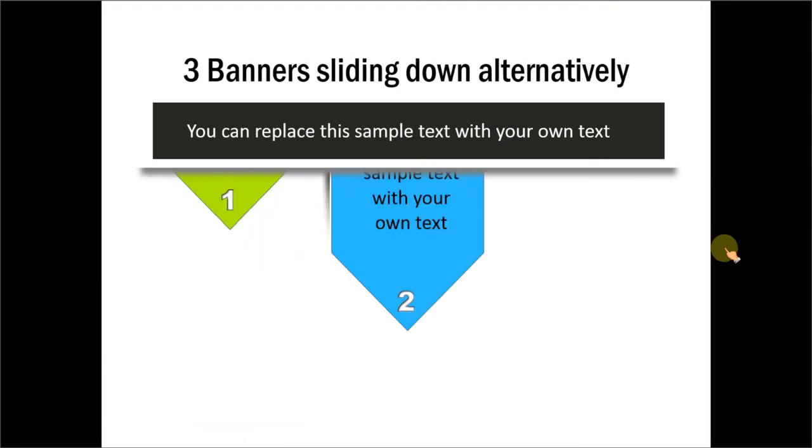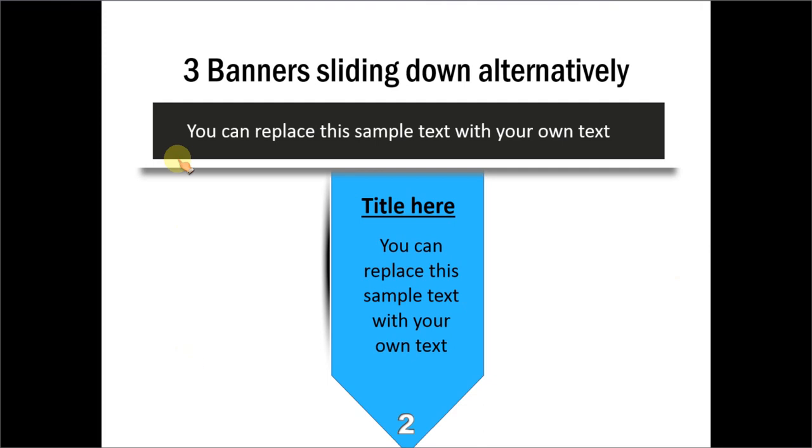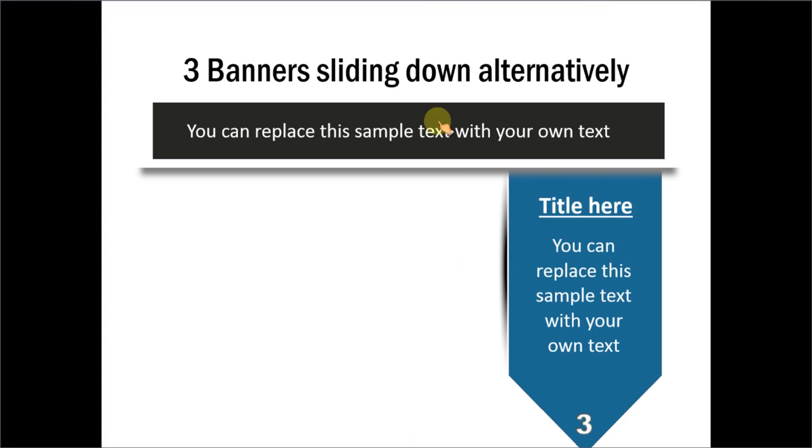Then we have the first banner talking about the first point. Now as I click, the first banner goes up and the second one comes down and it shows the second point. And as I click, the second one goes up and the third one comes down. So this is a very interesting way to talk about one point at a time using custom animation.